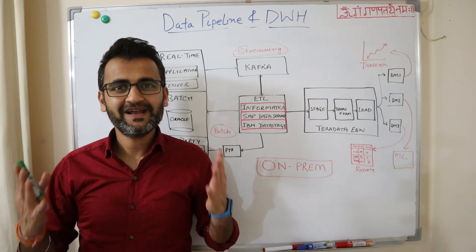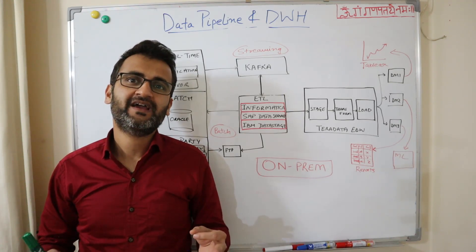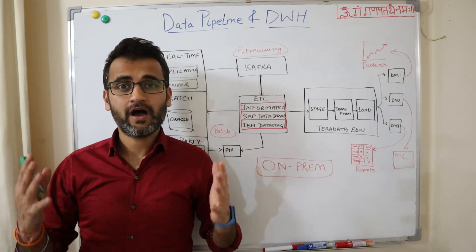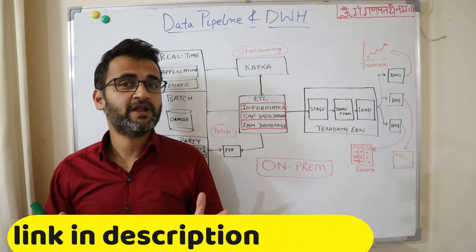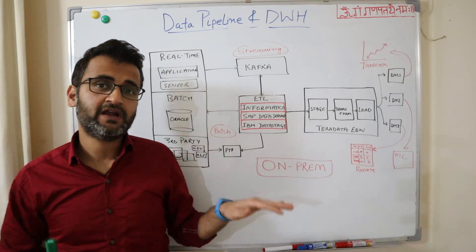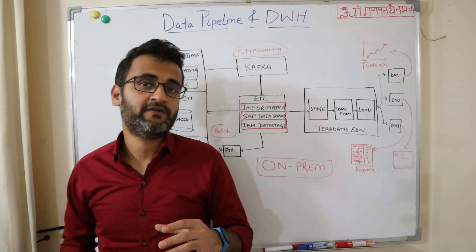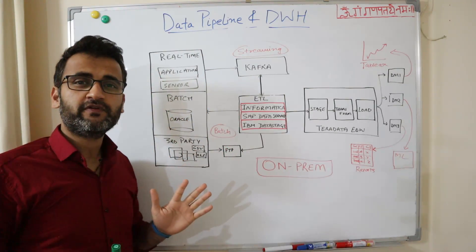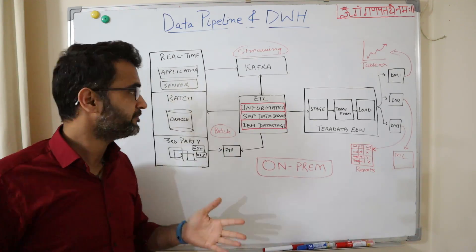Let's understand how an ETL design and an EDW design on-premise looks like. We have covered this to an extent in our data pipeline video, so if you have not watched it go check that out. Today we will understand it in the context of Google Cloud Platform. On the left we have all the different types of disparate data sources which we have in any enterprise.